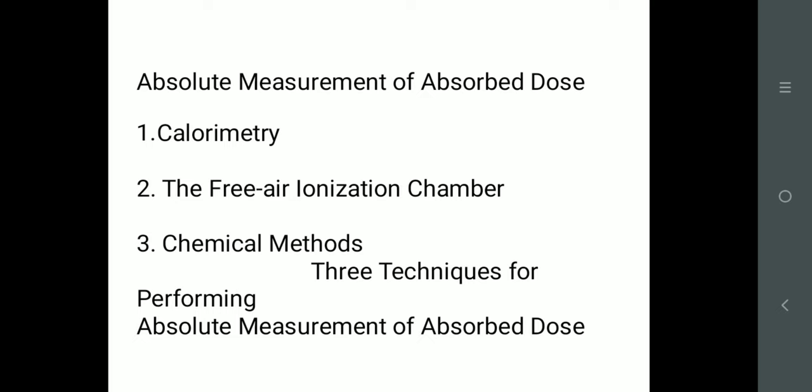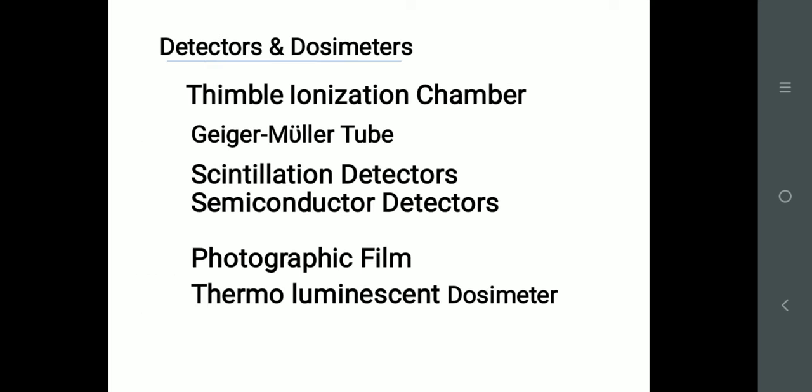To measure absorbed doses, we have calorimetry, free ionization chamber, chemical methods mostly used in departments, and detectors for area monitoring: thimble ionization chamber, Geiger-Müller counter, scintillator detectors, semiconductor detectors, photographic film badge, TLD, OSLD, and pocket dosimeters. Recently we are having GafChromic meter — like litmus paper, you keep the paper and the color increases as per the dose. We have bubble test: load a syringe with bubbles, keep it in the radiation area, and the more the bubbles, the more the ionizing radiation. And MOSFET detectors — Metal Oxide Semiconductor Field Effect Transistors — are also used.